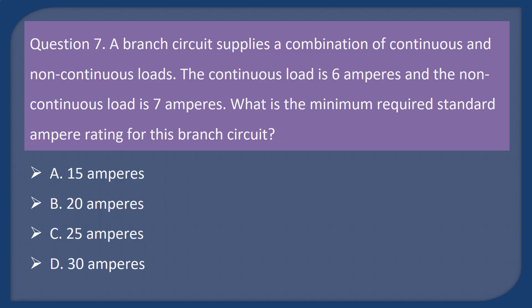Question 7. A branch circuit supplies a combination of continuous and non-continuous loads. The continuous load is 6 amperes and the non-continuous load is 7 amperes. What is the minimum required standard ampere rating for this branch circuit? A. 15 amperes. B. 20 amperes. C. 25 amperes. D. 30 amperes.